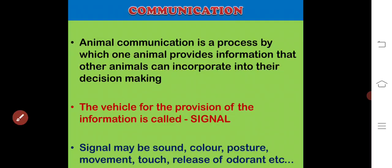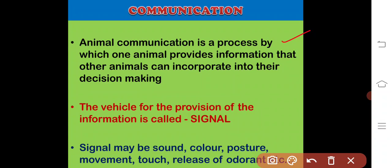Animal communication is a process by which one animal provides information that other animals can incorporate into their decision making. The vehicle for provision of information is called a signal. The signal may be a sound, color pattern, posture, movement, electrical discharge, touch, release of an odorant, or some combination of all these mediums.